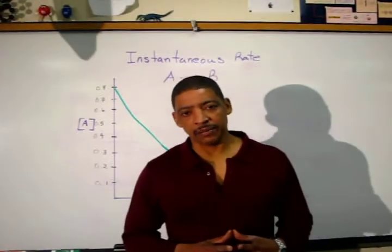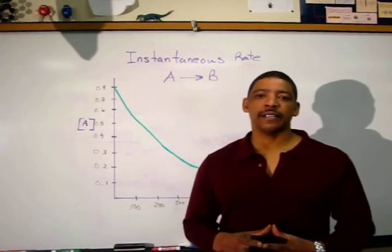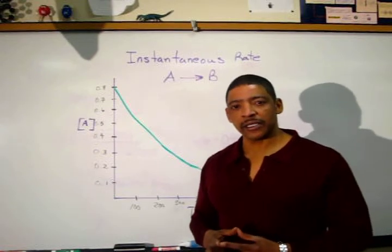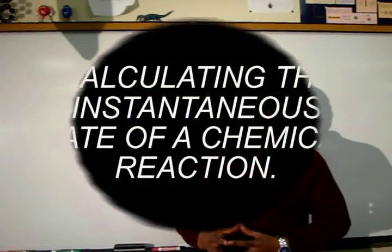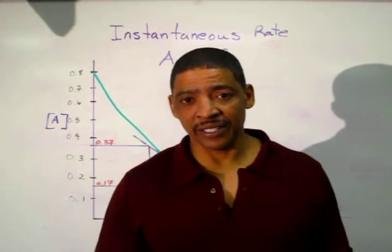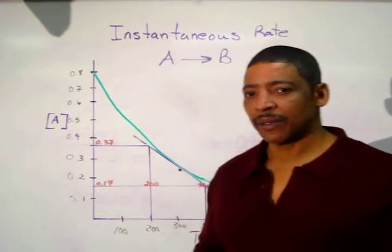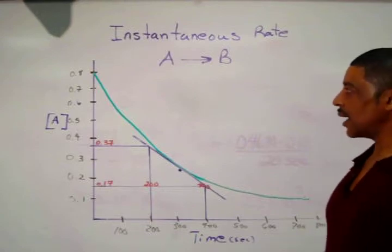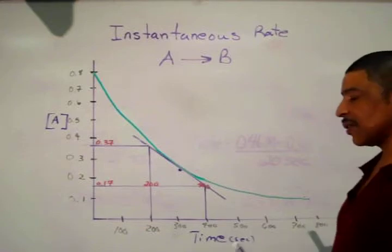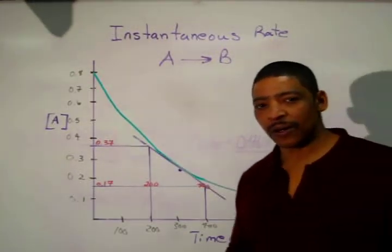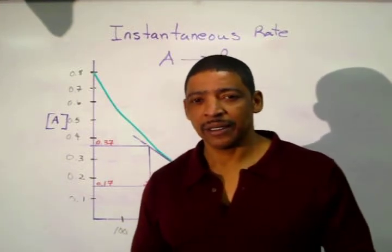The average rate of a chemical reaction may be calculated by dividing the change in concentration of a reactant or the change in concentration of a product by the change in time. However, to know the rate of a reaction at a specific time requires a different technique. The rate of a chemical reaction at a specific point in time is known as the instantaneous rate.